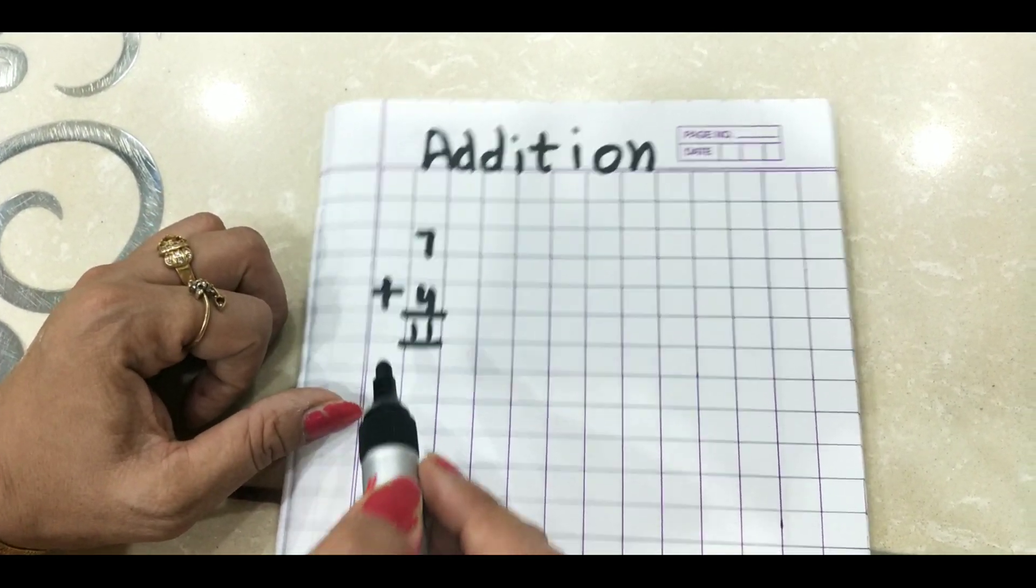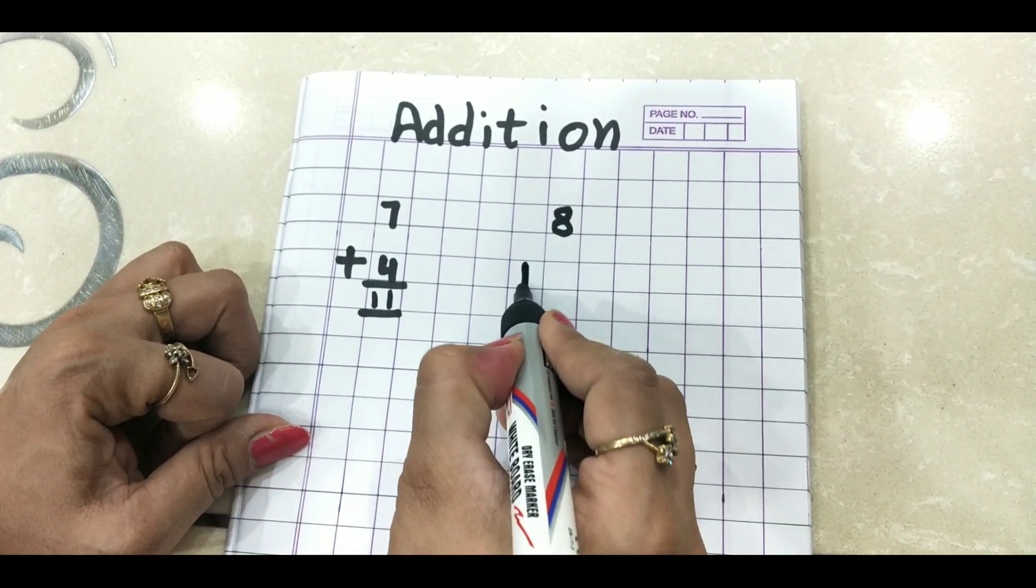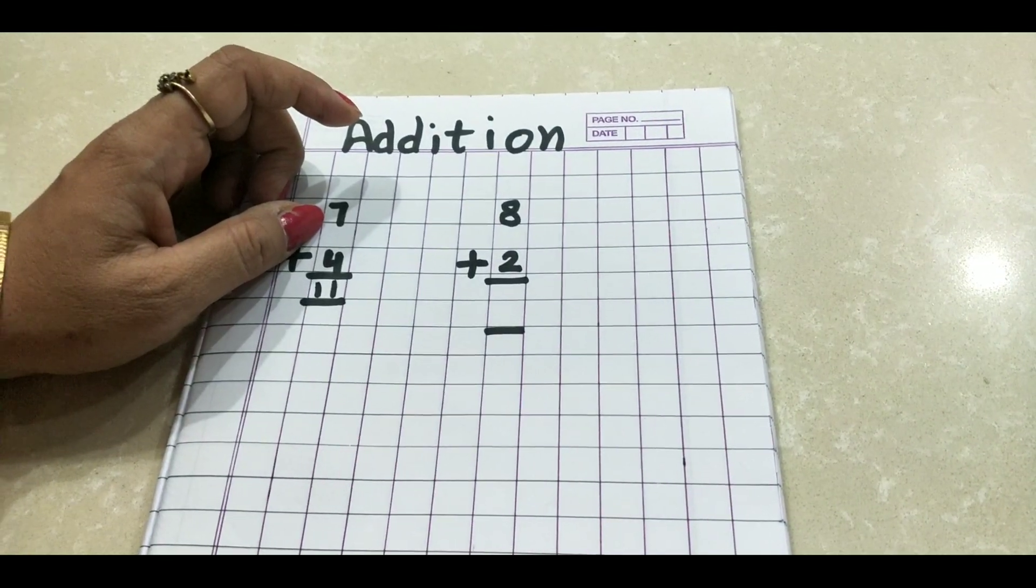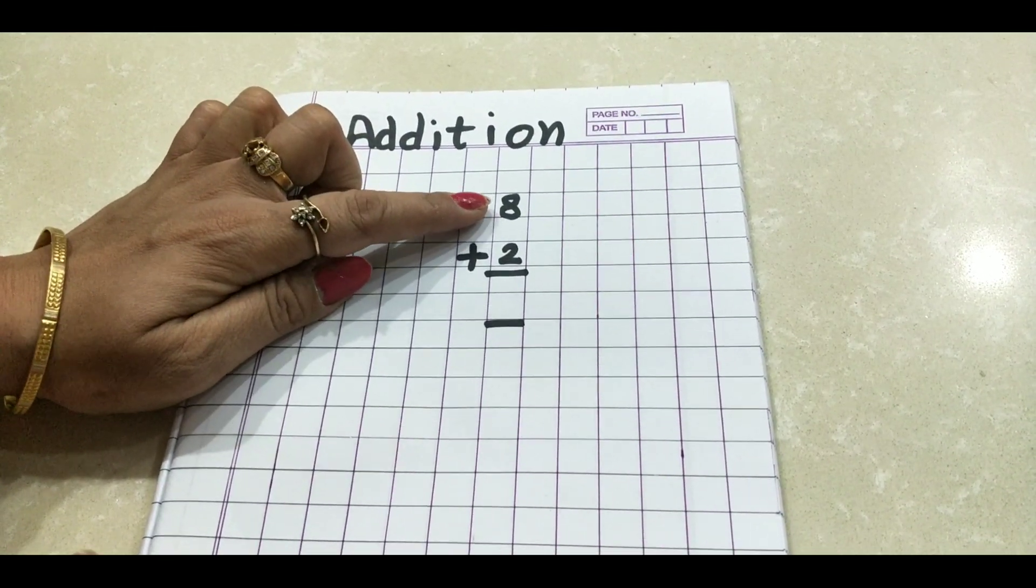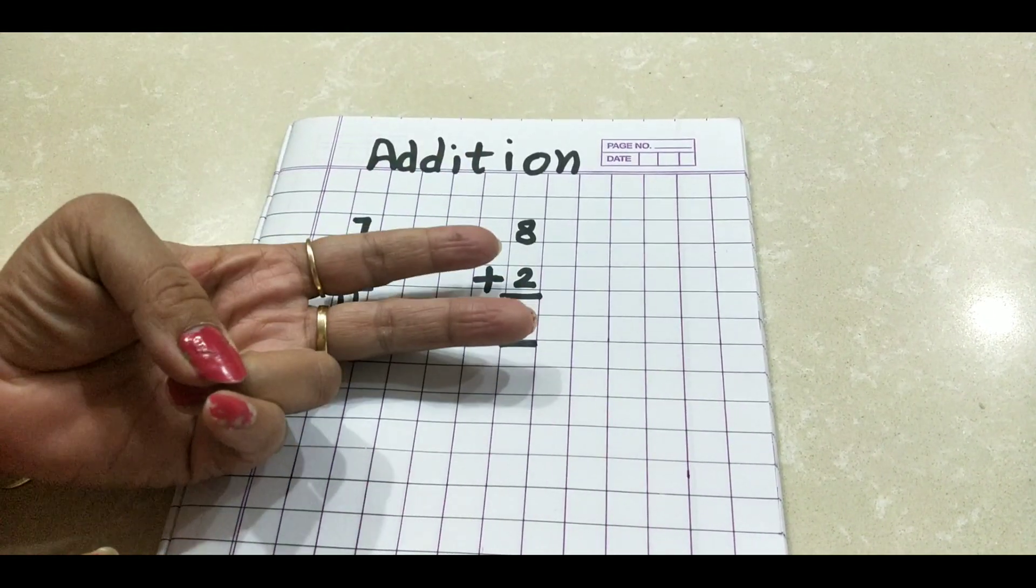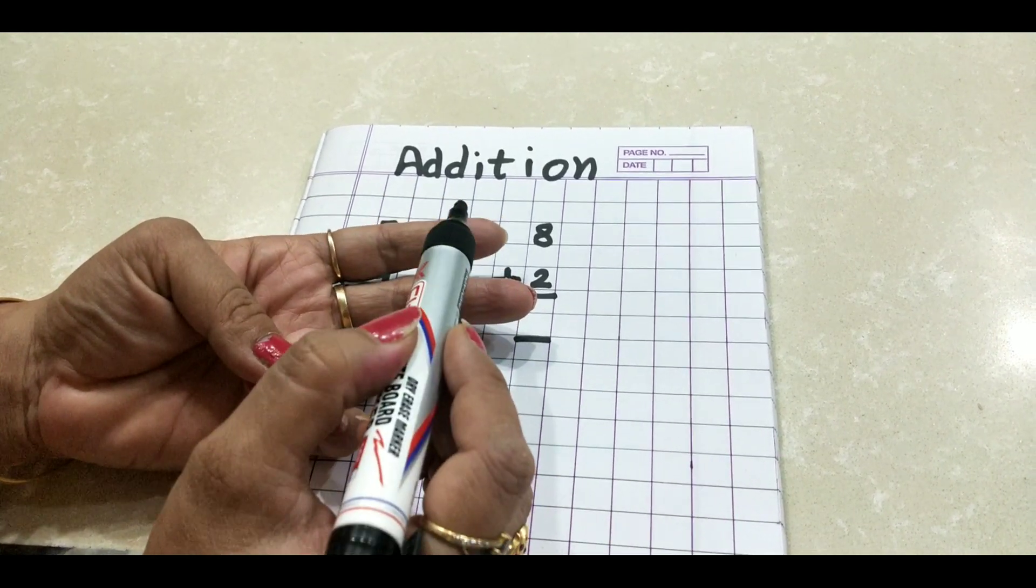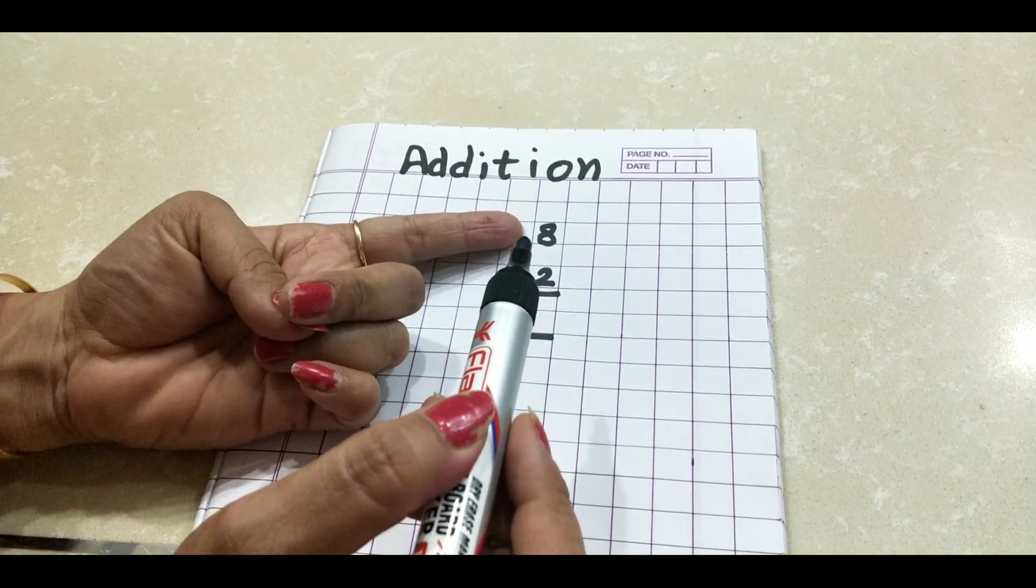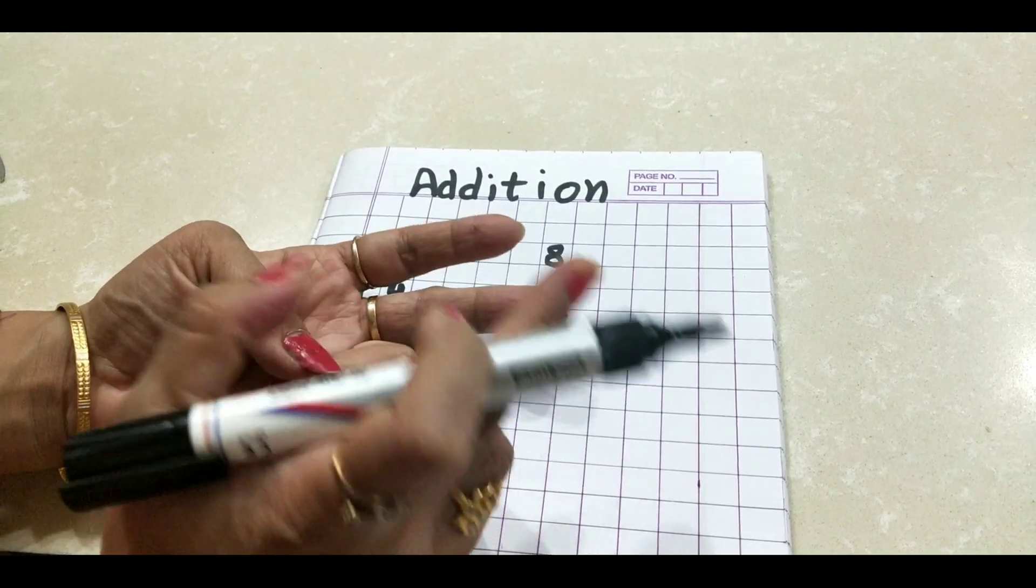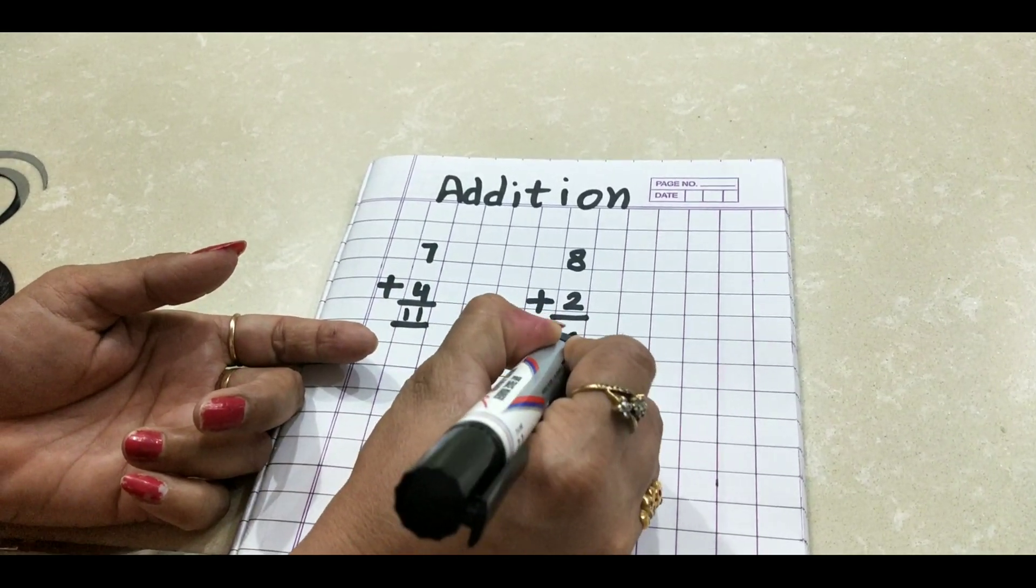One more question we'll do. Suppose we have to add 8 plus 2, right? Now, we'll keep 8 in our mind and 2 on our fingers. 8, 9, 10. Where is it? 8 is in our mind. After 8, 9, 10. What is the answer? 10.